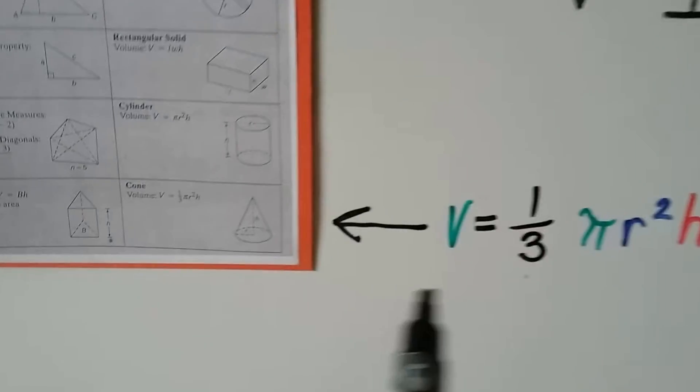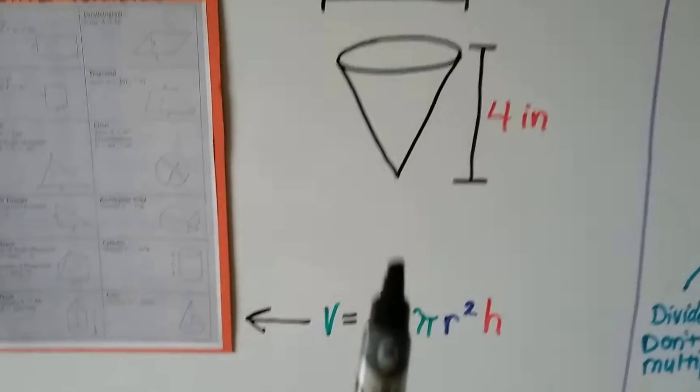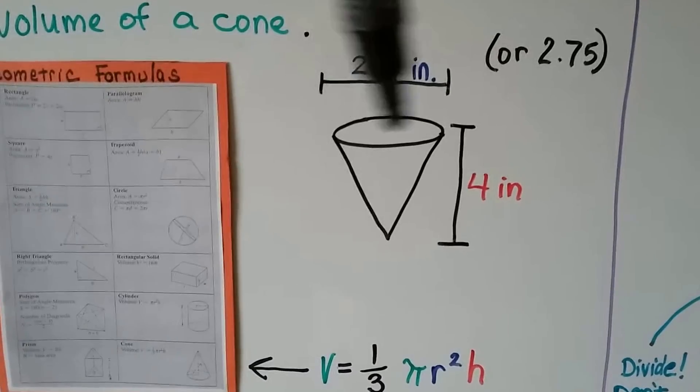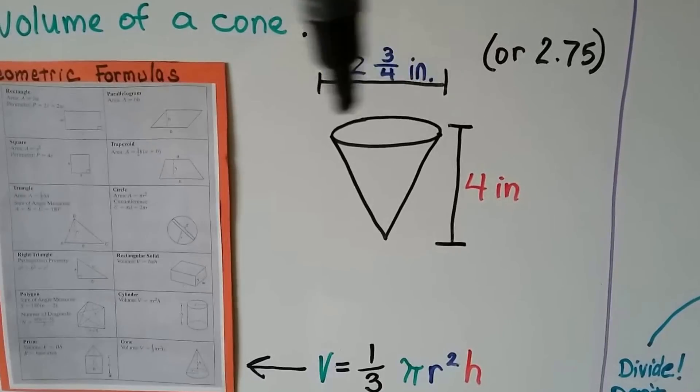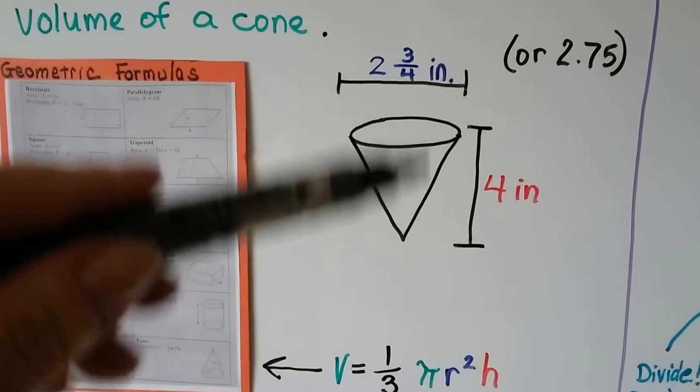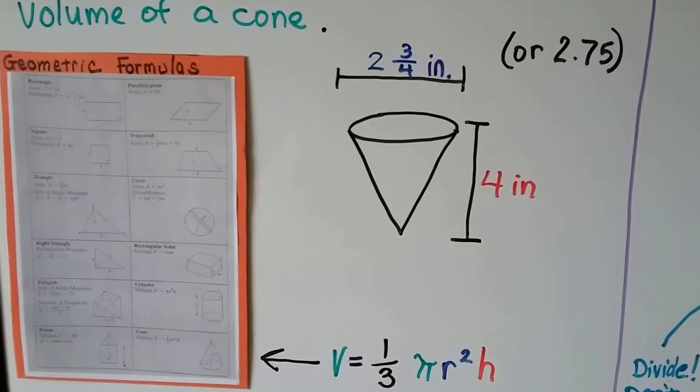We're going to be using the dimensions. It tells us that from this edge to this edge across the opening of the cup is 2 and 3 fourths inches and its height is 4 inches. That's our paper drinking cup.